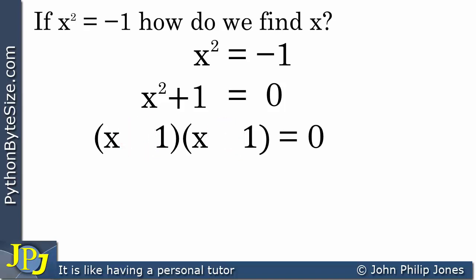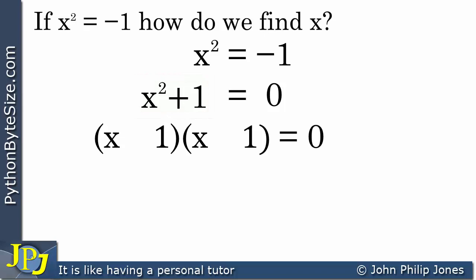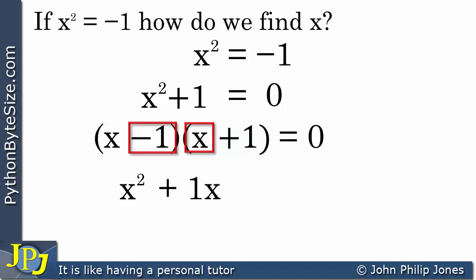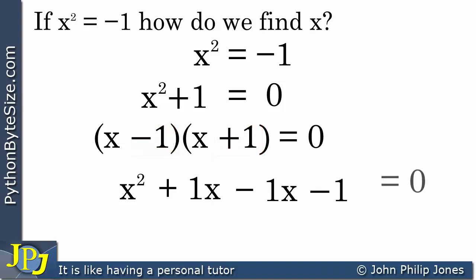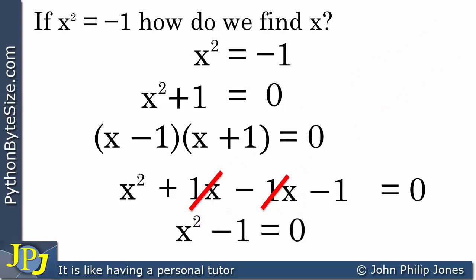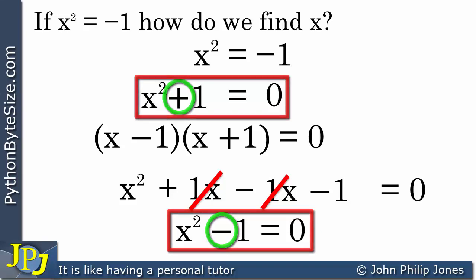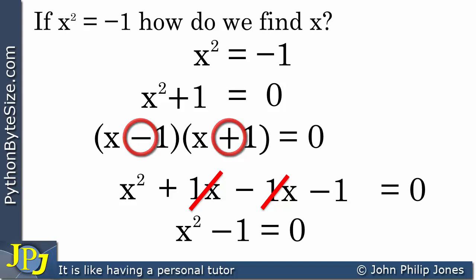I'm going to take each combination in turn and see whether I get x squared plus 1 back when I expand the brackets. Let's look at the first one — I've chosen negative and positive. Expanding: x times x gives x squared, x times plus 1 gives plus 1x, minus 1 times x gives minus 1x, and minus 1 times plus 1 gives minus 1, all equaling 0. The x terms cancel, leaving x squared minus 1 equals 0. That is not x squared plus 1, so these sign choices do not work.